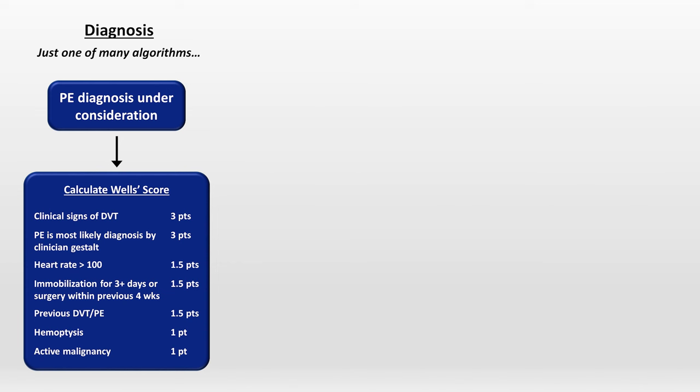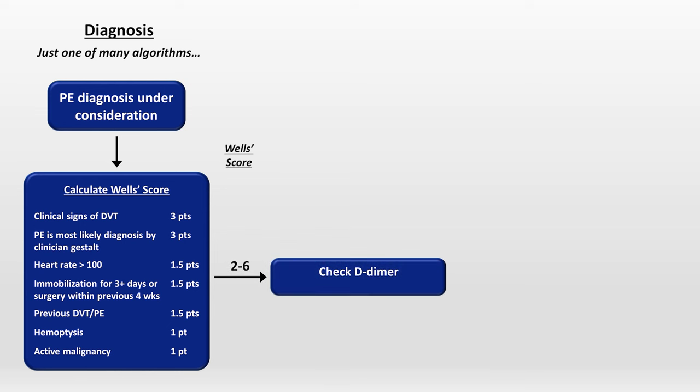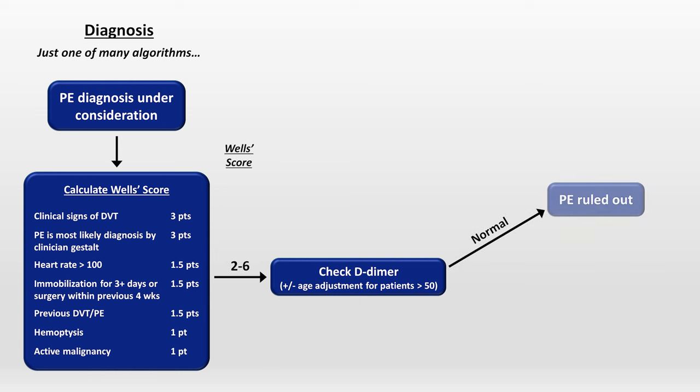When faced with a patient who might have an acute PE, the first step is to calculate their Wells score, a popular and validated clinical prediction rule. Based on their score, they end up in one of three risk categories. Starting with an intermediate score of two to six, the next step for these patients is to check D-dimer. Some advocate for using an age adjustment of the normal range for patients above the age of 50. If the D-dimer is normal, a PE has been ruled out.